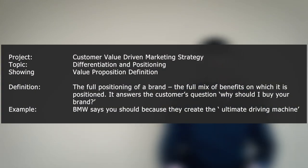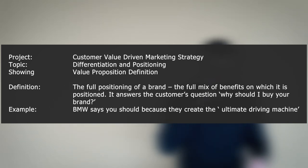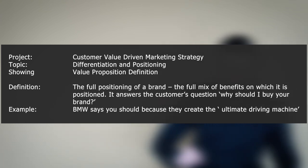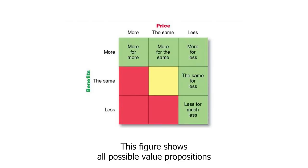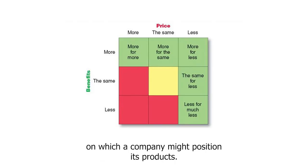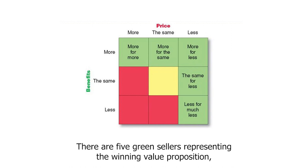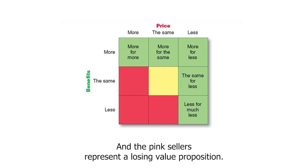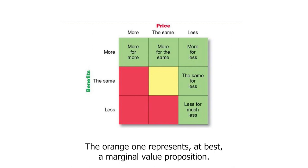The value proposition is the full positioning of a brand — the full mix of benefits on which it is positioned. It answers the customer's question: why should I buy from your brand? For example, BMW says you should buy it because they create the ultimate driving machine. This figure shows all possible value propositions on which a company might position its products. There are five green cells representing the winning value propositions that give the company a competitive advantage, and the pink cells represent losing value propositions. The orange one represents at best a marginal value proposition.